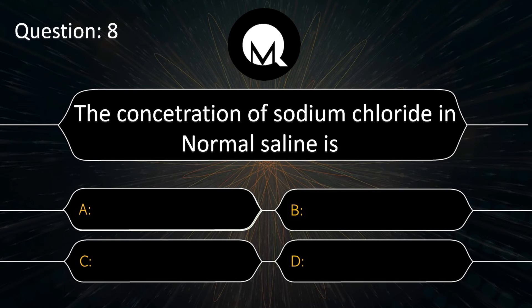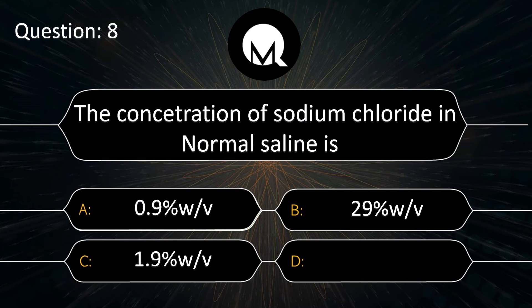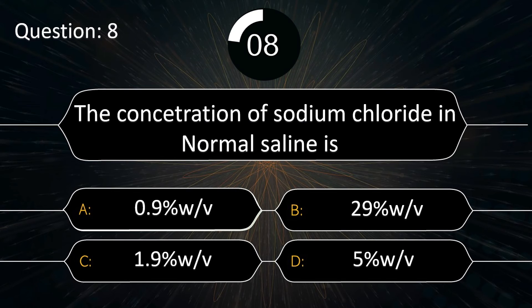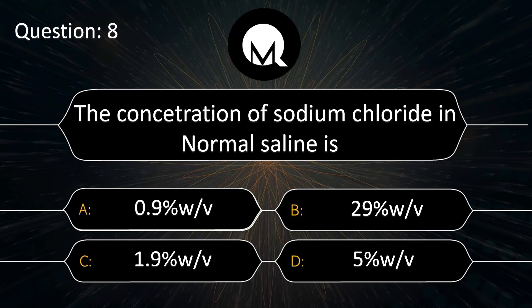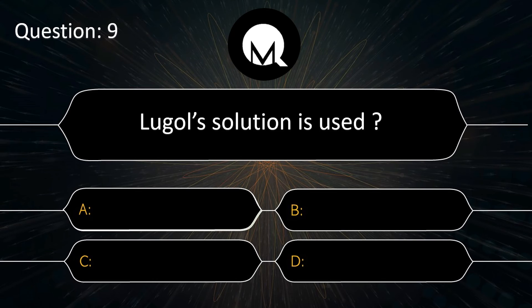The concentration of sodium chloride in normal saline is: 0.9% W/V, 29% W/V, or 1.9% W/V. The answer is 0.9% W/V.